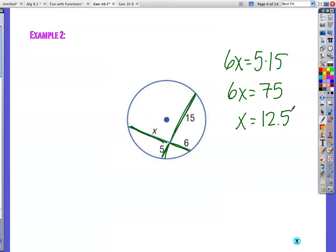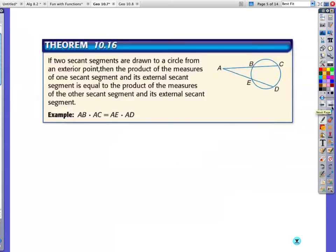Remember, these have to be chords, and they have to cross each other or intersect each other in a circle. Now, notice this is not two chords. We actually have a couple of secants. So here's the rule.